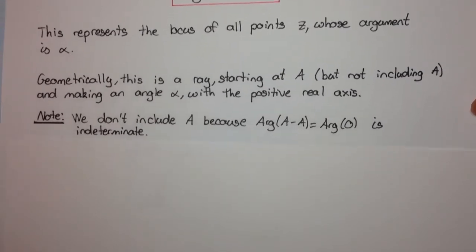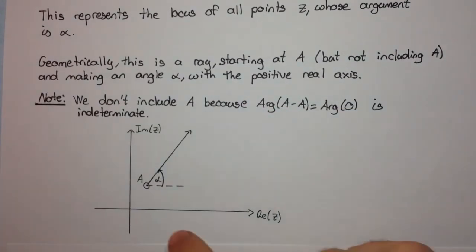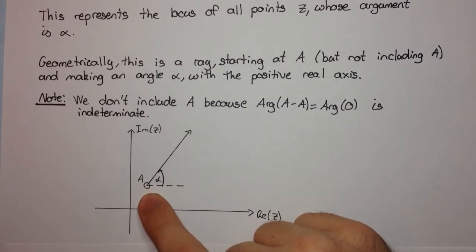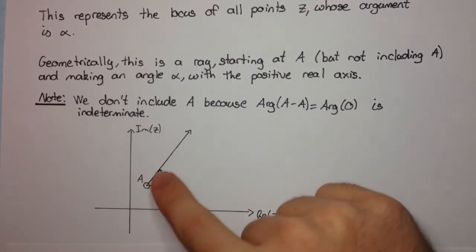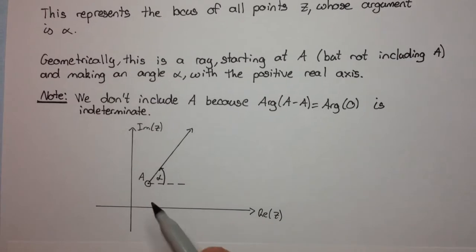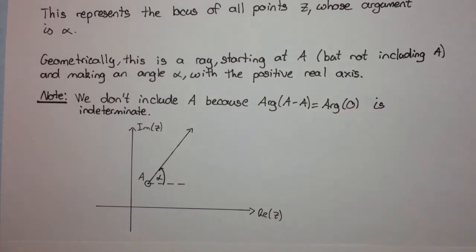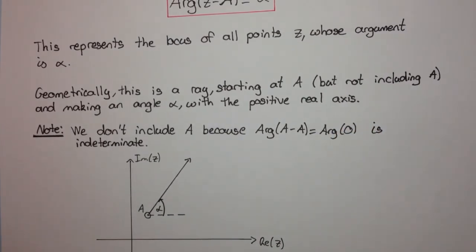So we have that arg zero is indeterminate. So how do we represent this? Well, it's going to be a ray, as it says here. It's a ray that starts at a, but doesn't include a, so we draw an open circle. And it's the ray that makes an angle α with the positive real axis. So that's what this dotted line is. This dotted line is parallel to the real axis, and so therefore, this angle here is α.